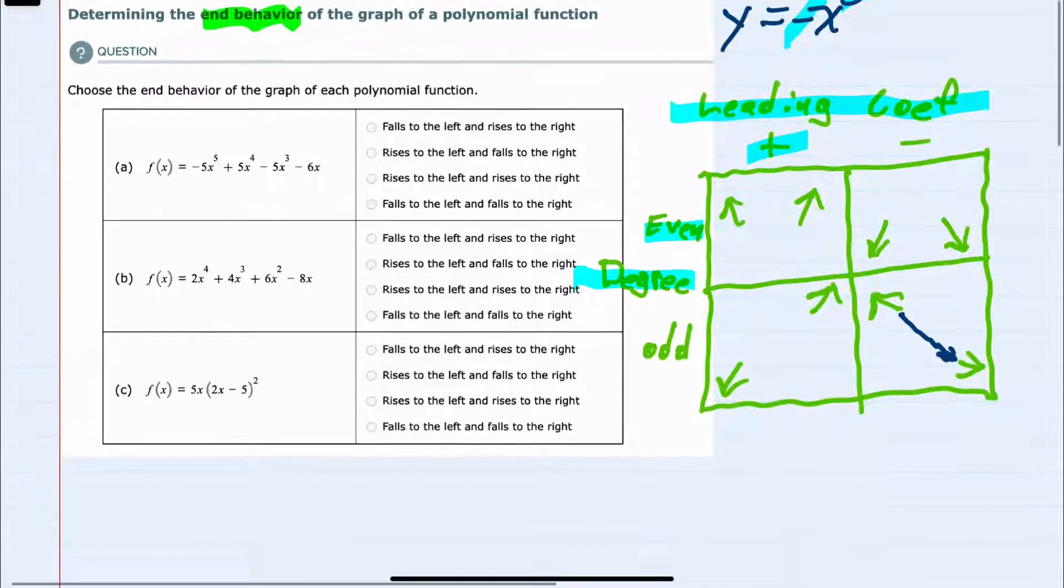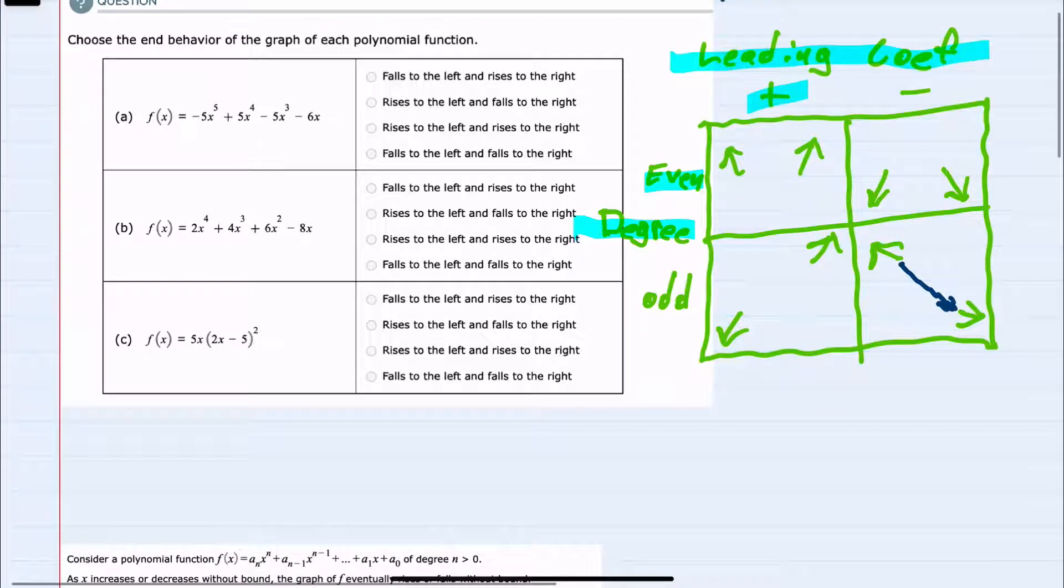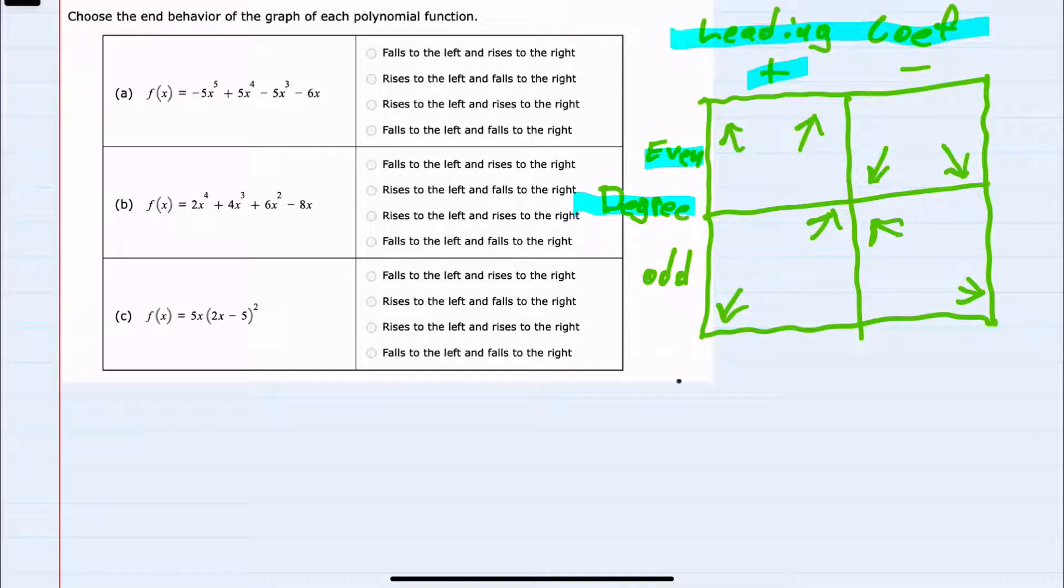So if we ever forget this sort of chart, we can always generate it by recalling that y equals x squared goes up to the left and the right.